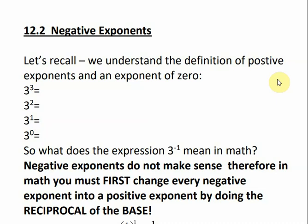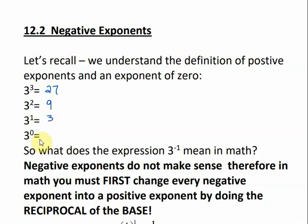This is 12.2 negative exponents. Let's recall what we know about exponents. 3 to the third power would be 3 times itself 3 times: 3 times 3 is 9, times 3 is 27. 3 squared is 3 times 3, that's 9. The power of 1 rule means it's going to be itself, so 3 to the 1 power is just 3. And anything to the 0 power is 1, so 3 to the 0 power is 1.